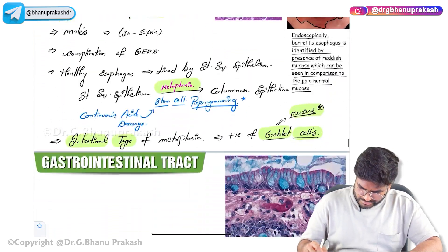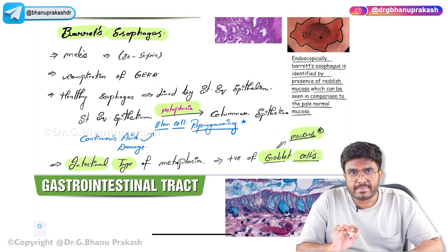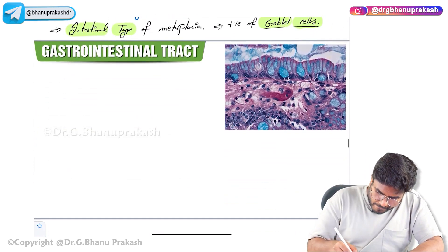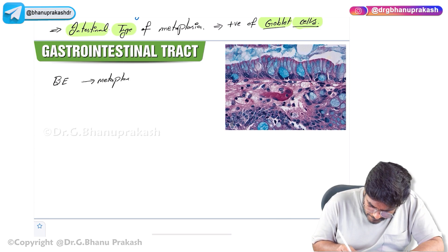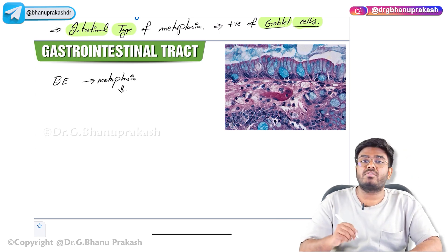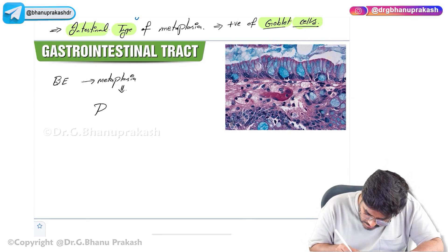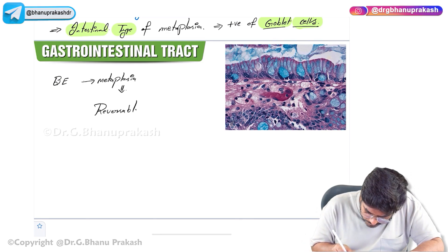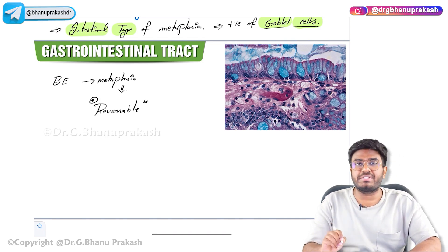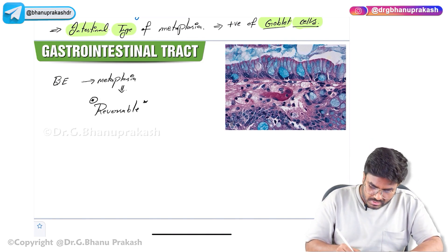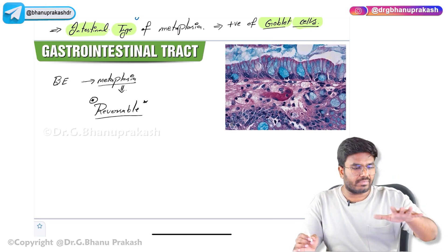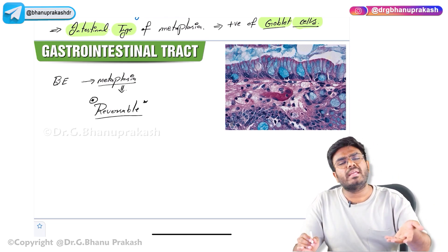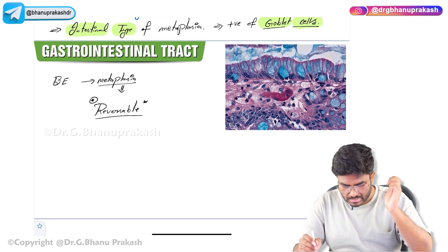Barrett's esophagus is a type of cellular adaptation — specifically metaplasia. Is this metaplasia reversible? Yes, 100% reversible. This is not dysplasia; it is just metaplasia and it is reversible. Cell adaptations are reversible, and metaplasia is also reversible. If you decrease the acidic insult day by day, the acidic insult decreases and automatically Barrett's esophagus will also return to normal.